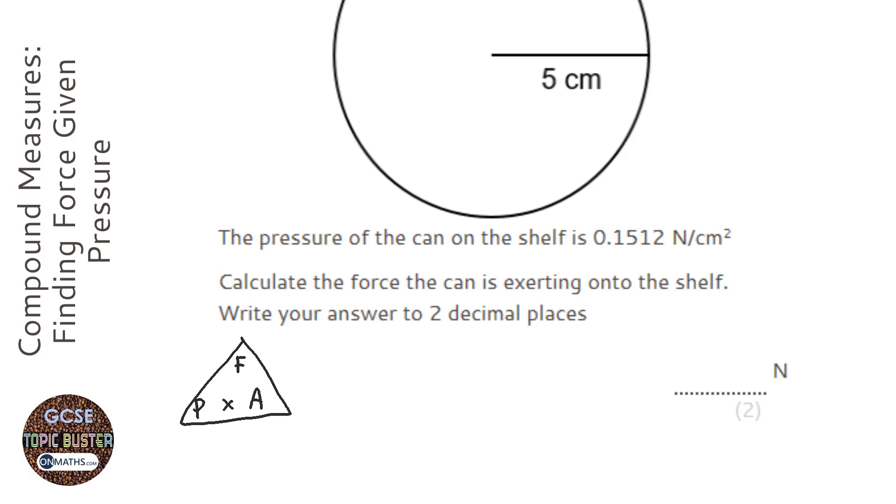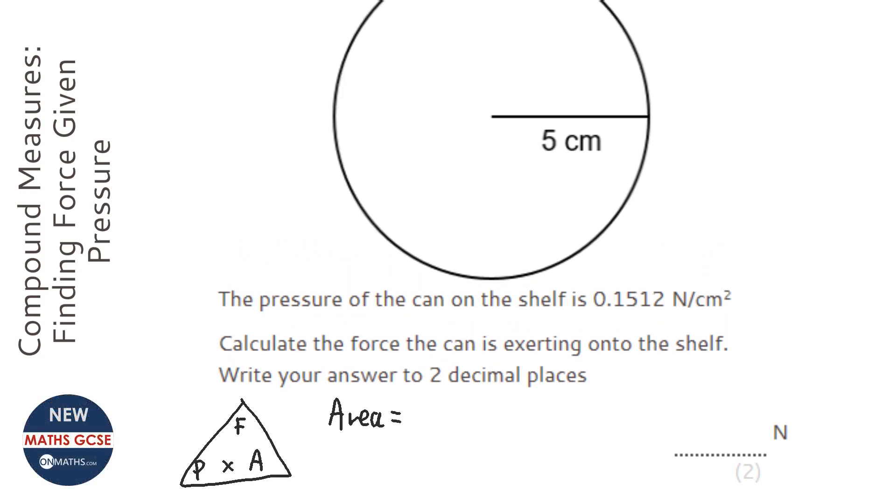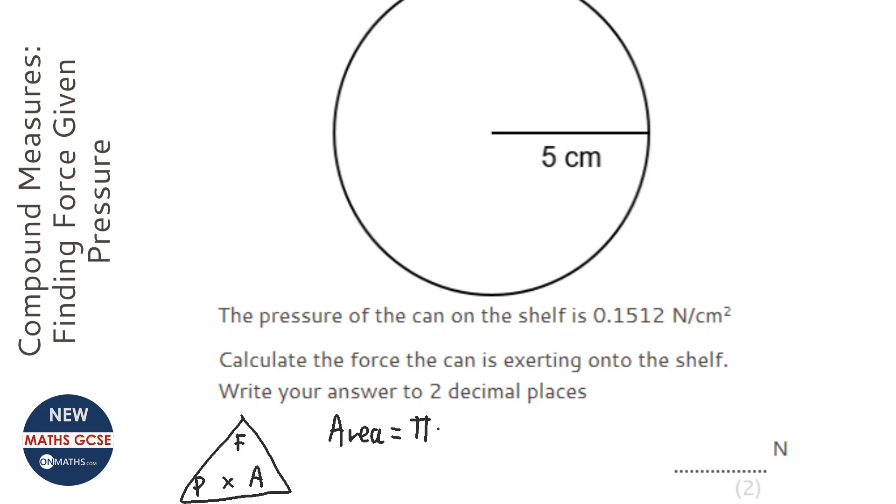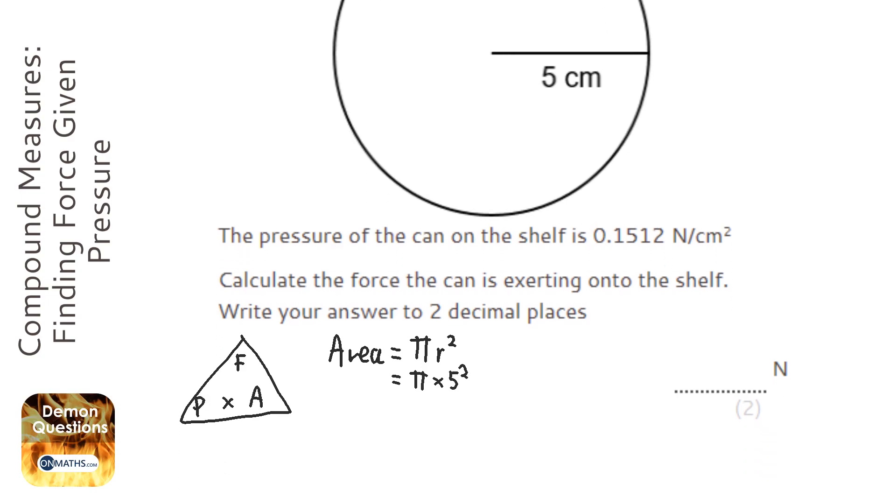So the first place to start is the area. It's a circle so the area is pi r squared, which is pi times 5 squared, so it's going to be 25 pi or 25 times pi, which is...